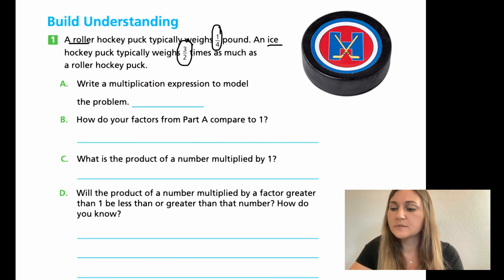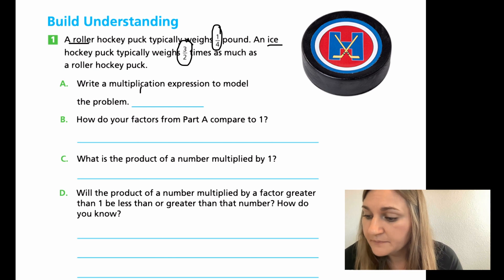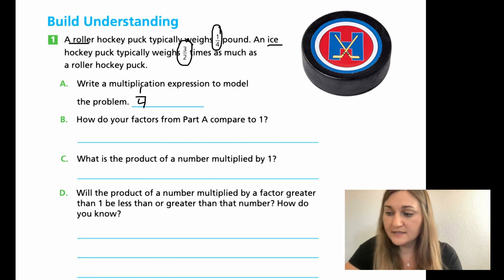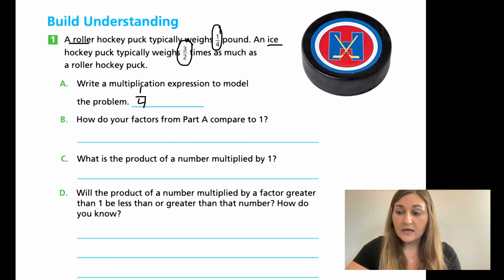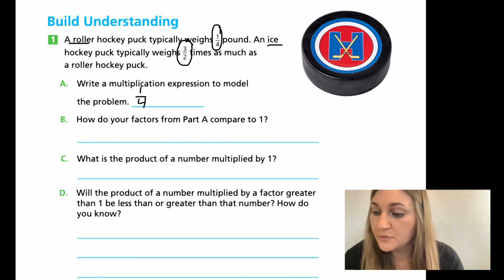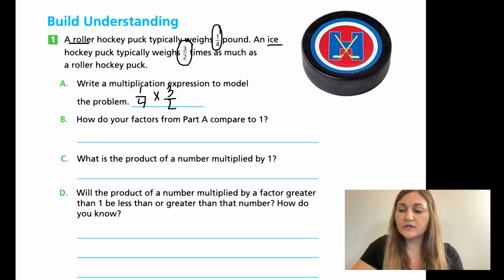So for A, it says write a multiplication expression, not equation, so no equal sign, just the expression to model the problem. So what we want to do is we want to take our original weight, which is one-fourth of a pound, and we want to multiply it by how many times as much it was. And that was the three halves. So I'm taking the original and I'm multiplying it by how many times bigger or smaller it's telling me to go.